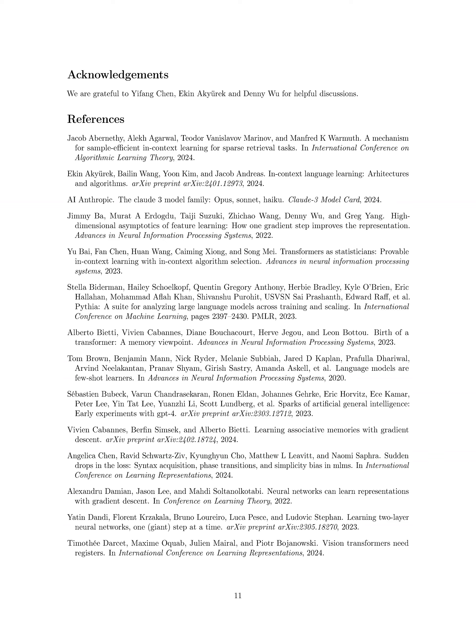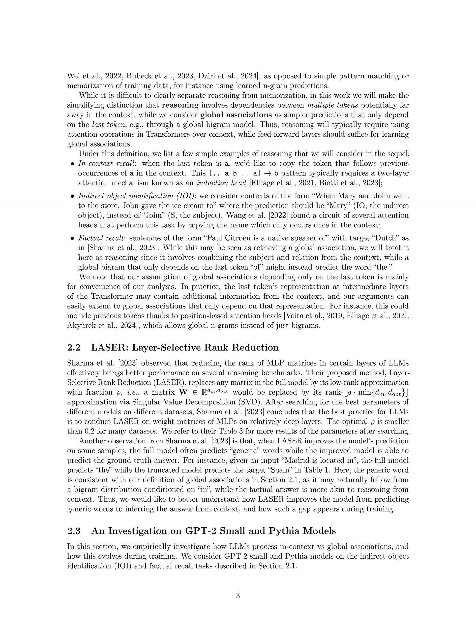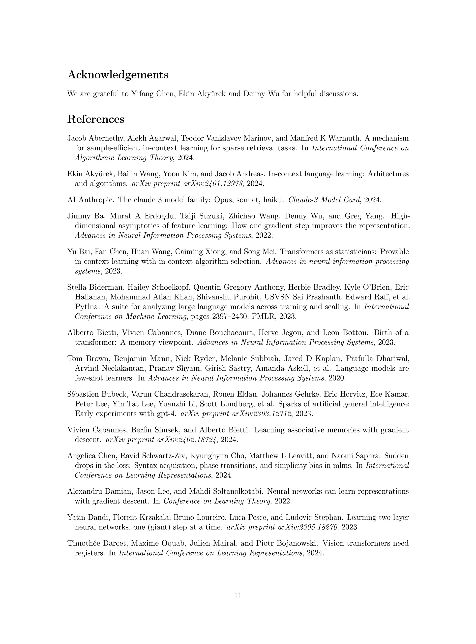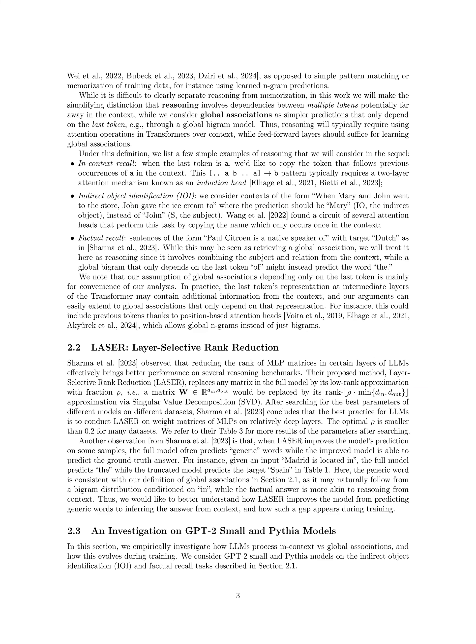Step 1: Identify the weight matrices in the LLM that need to be reduced in rank for improved performance on reasoning tasks. Step 2: Conduct SVD on the identified weight matrices to obtain their low-rank approximations. Step 3: Replace the original weight matrices with their low-rank approximations in the model. Step 4: Experimentally determine the optimal parameters for conducting LASER, such as the fraction Rho for rank reduction and the specific layers where LASER should be applied.